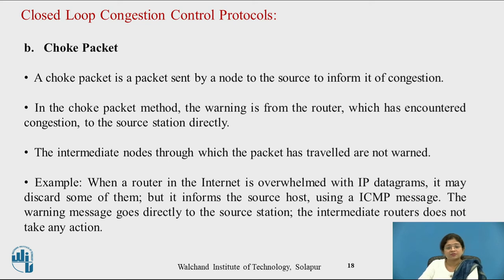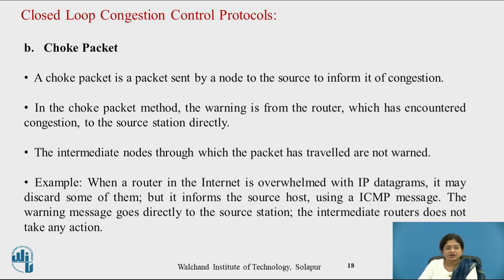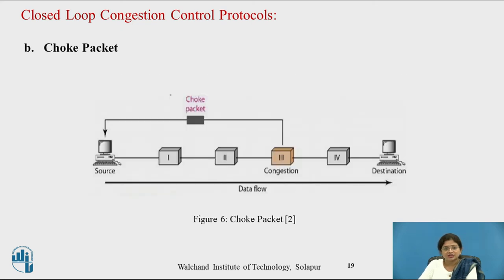A choke packet is a packet sent by a node directly to the source to inform it of congestion. In the choke packet method, the warning goes from the congested router directly to the source station, and intermediate nodes through which packets have traveled are not warned. When a router in the internet is overwhelmed with IP datagrams, it may discard some and inform the source host using an ICMP (Internet Control Message Protocol) message. Intermediate routers do not take any action.